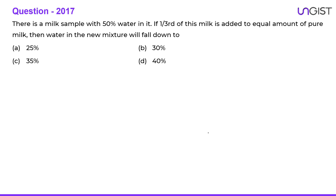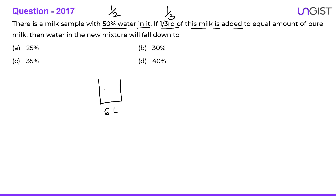The first question: there is a milk sample with 50% water in it. One third of this milk is added to an equal amount of pure milk. Let's assume we have a total of six liters of this milk sample. In those six liters we have three liters of milk and three liters of water, because it is 50% milk and 50% water.